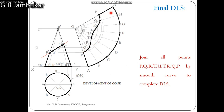So your DLS will look like this — in this way you complete the problem. The important dimensions are: angle 106 degrees, diameter of base circle 46 mm, axis height 75 mm, and the name is development of cone. Today we have seen the development of a cone cut by a section plane. Watch the video and try to complete the development of cone. In the next video we will see the development of pyramids.